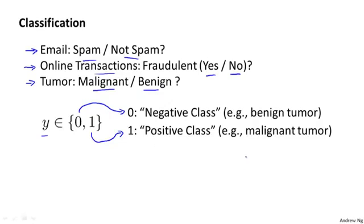So zero may denote the benign tumor and one positive class may denote a malignant tumor. The assignment of the two classes to positive and negative, to zero and one, is somewhat arbitrary and it doesn't really matter. But often there is this intuition that the negative class is conveying the absence of something, like the absence of a malignant tumor, whereas one, the positive class, is conveying the presence of something that we may be looking for.